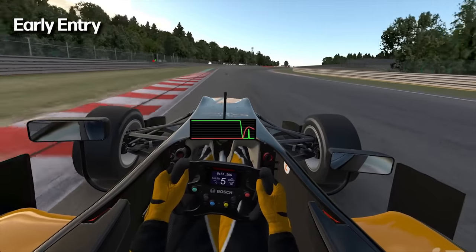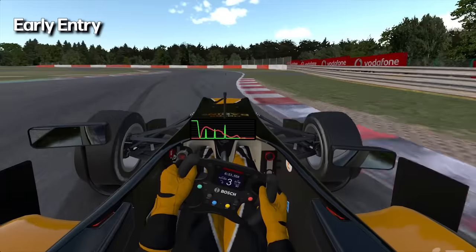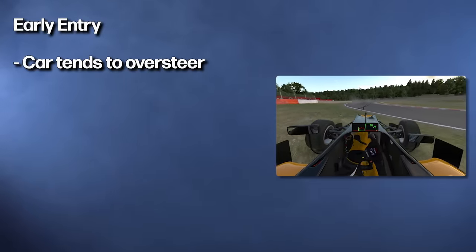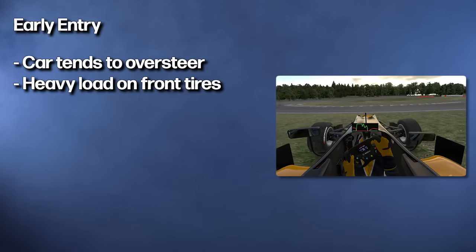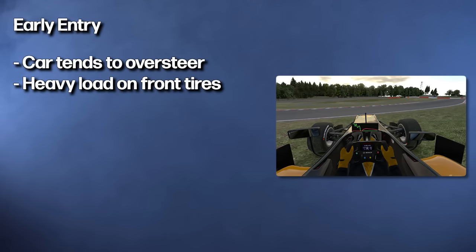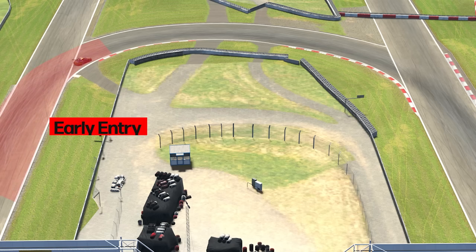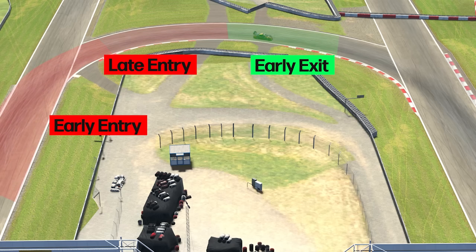This is also one of the most dangerous phases of the corner because of the bigger tendency of the car to oversteer, due to heavy load on the front tires and higher speeds — and in case the car is rear-wheel driven, high engine braking effects. When you do an early entry, it will determine all the next phases drastically, since each stage depends on the previous one in a snowball effect.